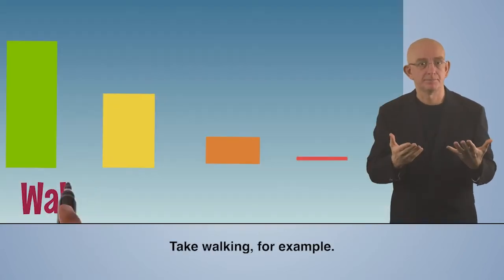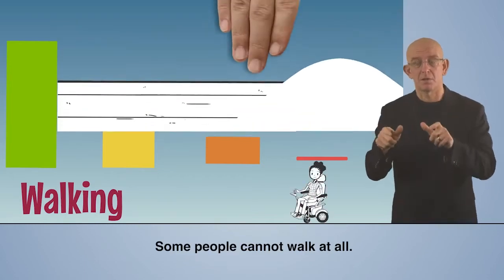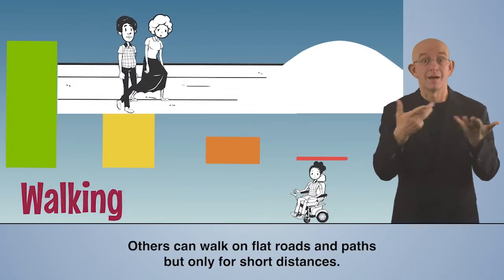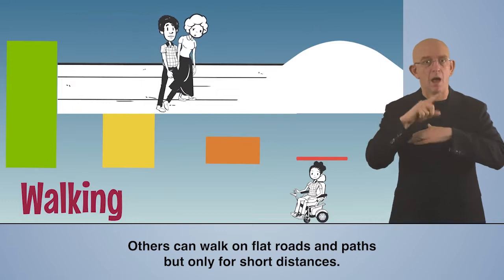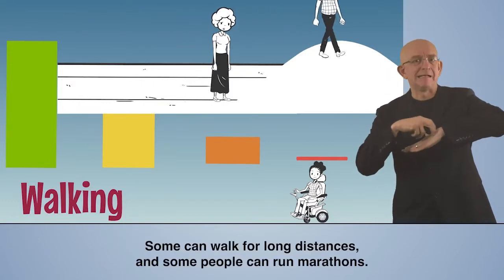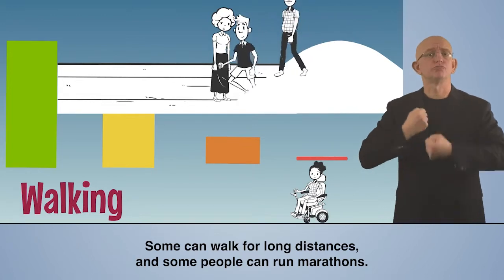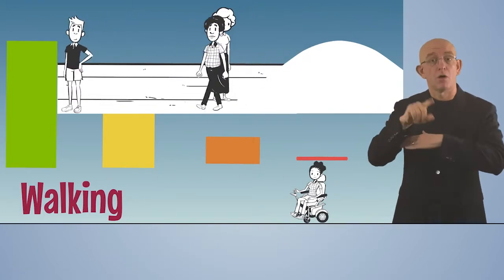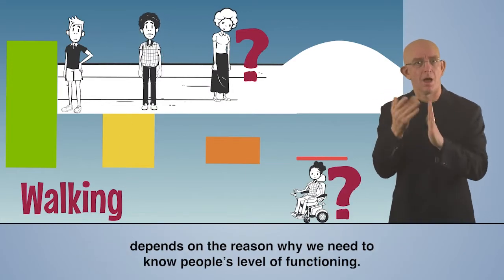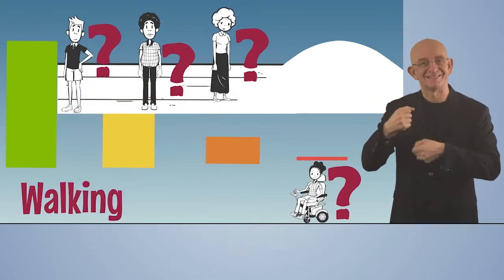Take walking, for example. Some people cannot walk at all. Others can walk on flat roads and paths, but only for short distances. Some can walk for long distances, and some people can run marathons. The cut-off point selected on the walking continuum depends on the reason why we need to know people's level of functioning.